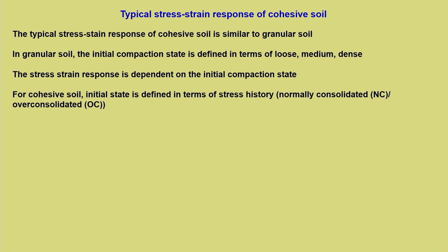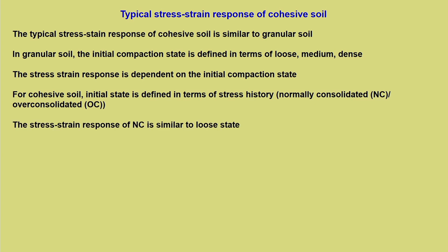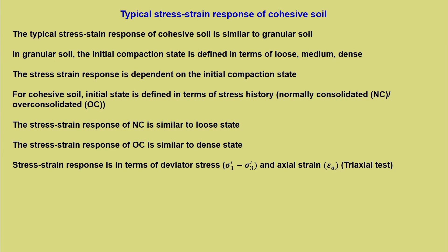For cohesive soil, the initial state is defined in terms of stress history — normally consolidated or over consolidated. Possibly you will appreciate why we discussed the volume change characteristics of the soil; it is basically for this reason. The stress history dictates the kind of stress-strain response of cohesive soil. The stress-strain response of NC is similar to loose state, and the stress-strain response of OC is similar to dense state. The stress-strain response is expressed in terms of deviator stress and axial strain, because we are referring basically to the triaxial test.